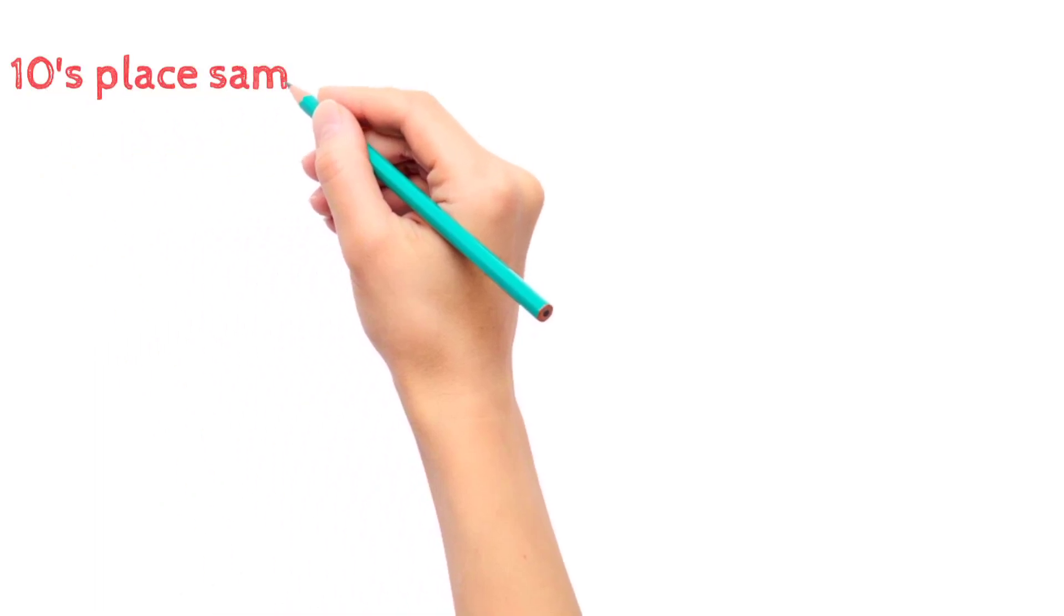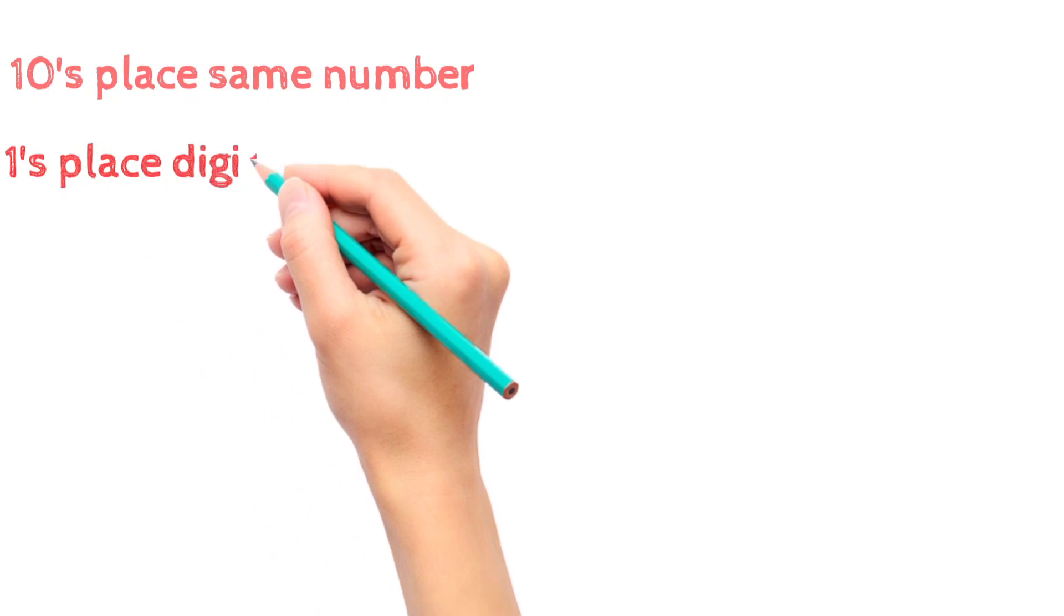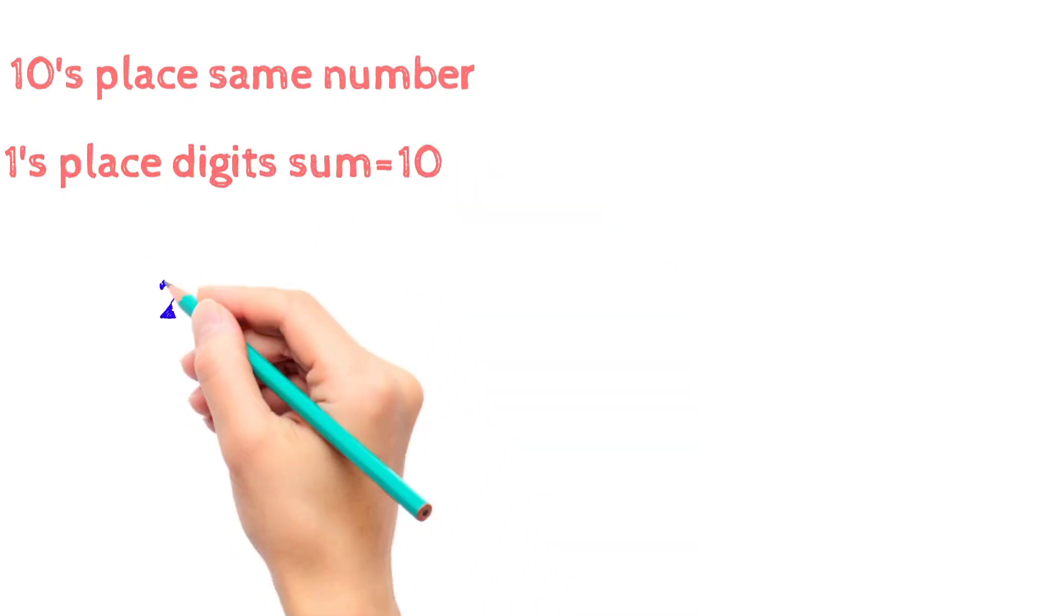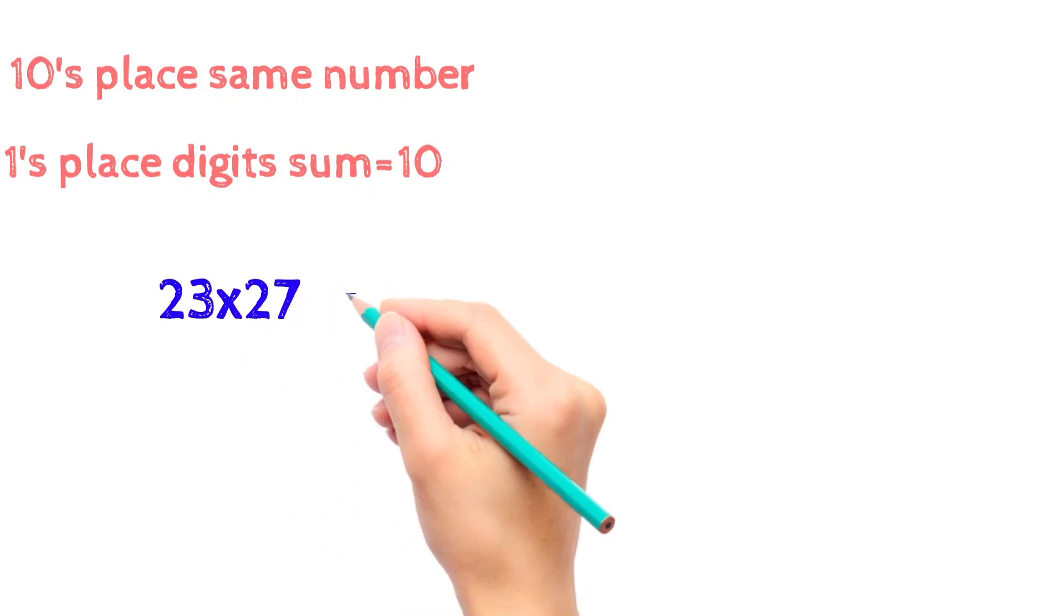Hello guys, in this video we will see a simple multiplication trick. Let's say for example we have two-digit numbers 23 into 27. Here we have the same tens place digit as 2 and ones place digits sum to 10.